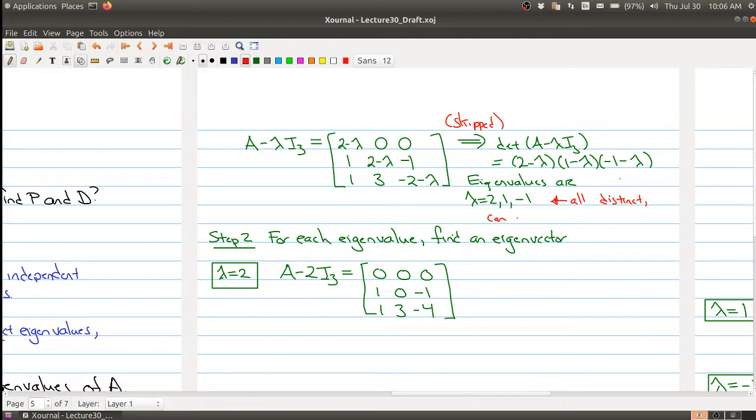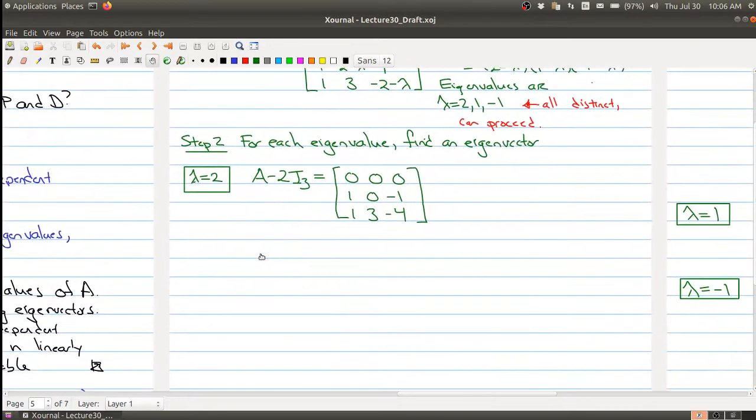Okay, so we did our first step—we got distinct eigenvalues. Now we can proceed to the next step. Now, for each eigenvalue, we need to find an eigenvector.